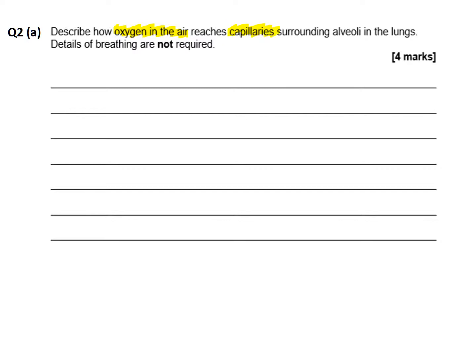The question does tell us underneath, and this is quite important, so you should take a highlighter pen in the exam and highlight the bits that really stand out. Details of breathing or ventilation are not required, so we don't need to spend time talking about the ventilation mechanism of inspiration — the ribs moving up and out, the external intercostal muscles, the diaphragm, etc.